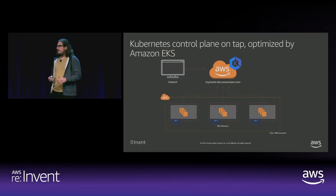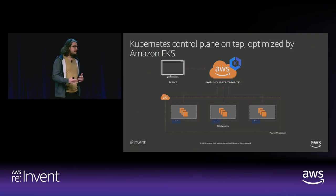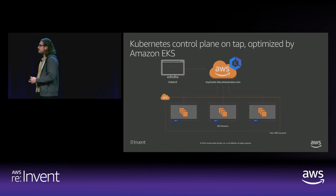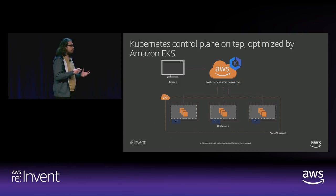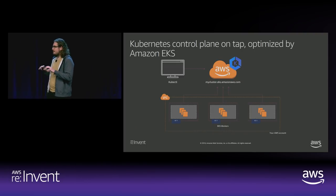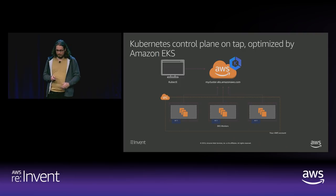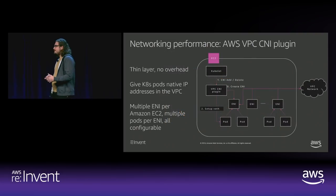Moving on to the control plane, the important thing to understand about EKS is that the Kubernetes control plane is optimized by the EKS team. I can set up my kubectl command-line tool and connect to a cluster endpoint hosted by Amazon EKS. I provision my worker nodes and add them to that control plane. I'm responsible for optimizing my application and worker nodes, but the control plane behind that cluster endpoint is completely hands-off for me — the Amazon EKS team ensures it performs well.